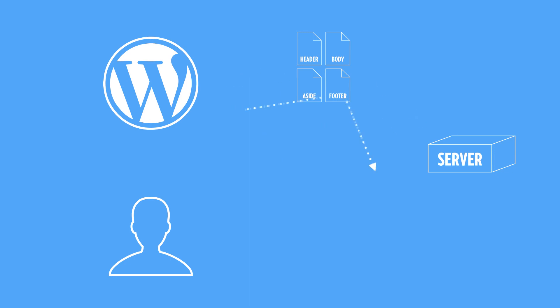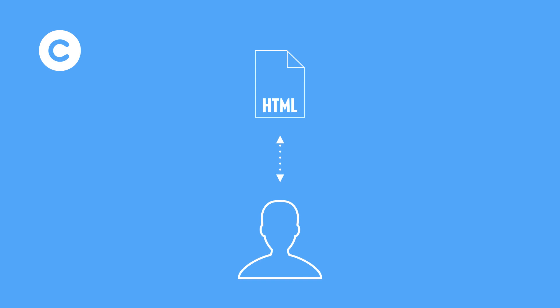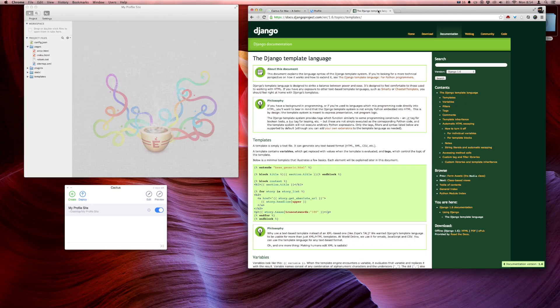At its heart, Cactus is a static site generator, which means at the end of the day it gives you raw HTML, CSS, and JavaScript files as the final output — as opposed to something like WordPress, which is PHP-based and needs a server to interpret and render it at every user request. A static site generator pre-renders all the HTML pages so it's serving just static files, which is a lot quicker. The templates are built on Django's templating language, which is Python-based, well documented, and has a good support community.